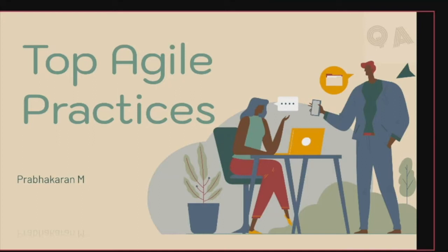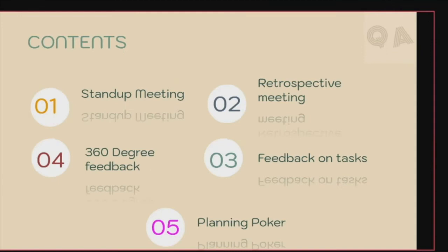Good afternoon, I'm Prabhakar, an automation engineer consultant at QA Engineers. Today we'll be seeing a demo on the top agile practices in the software industry. We'll be discussing five different terms: stand-up meeting, retrospective meeting, feedback on tasks, 360-degree feedback, and planning poker. In the upcoming video, we'll discuss the remaining agile practices.